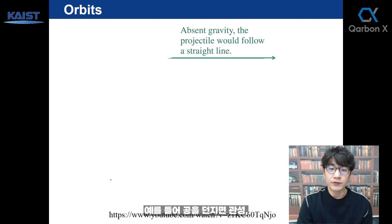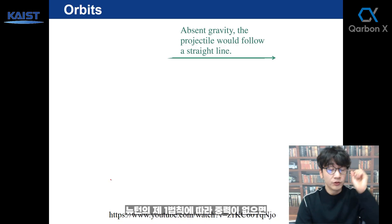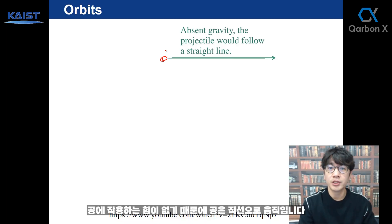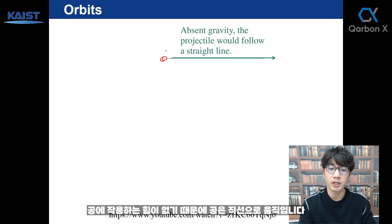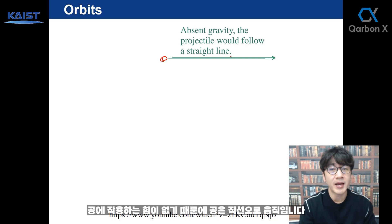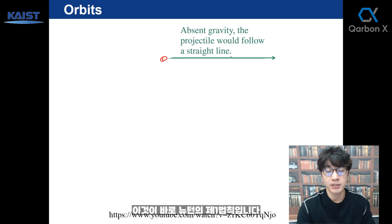Without gravitational force, for example, if you throw a ball, due to inertia — Newton's first law — without any force acting on that ball, it'll move in a straight line. That's Newton's first law.